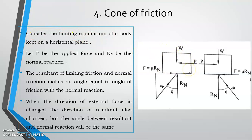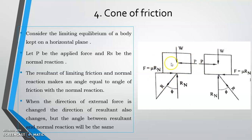Next is the cone of friction. Consider a body resting on a horizontal plane. Weight acts vertically downward. A horizontal force P is applied, and limiting friction acts in the opposite direction. There is a normal reaction Rn. The resultant of limiting friction and normal reaction makes an angle phi with the normal reaction.